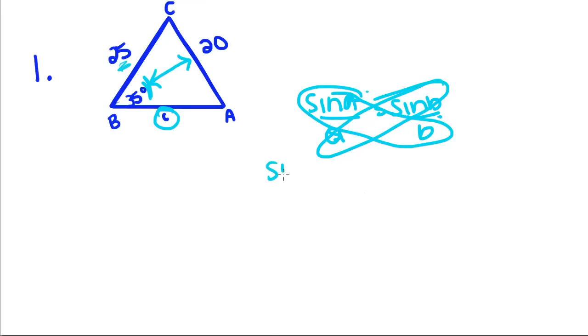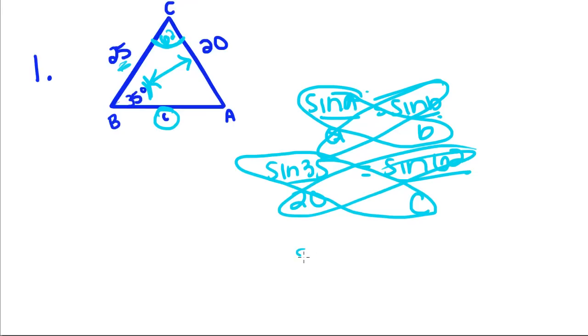So we're going to have sine of 35 over 20 is equal to sine of this angle. But we actually have to know what the measure of this angle is. So say the measure of this angle is 62. So sine of 62 over C. Now we're going to cross multiply sine of 35 times C is equal to 20 sine of 62.